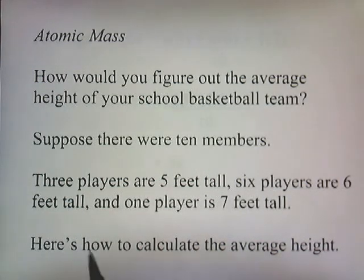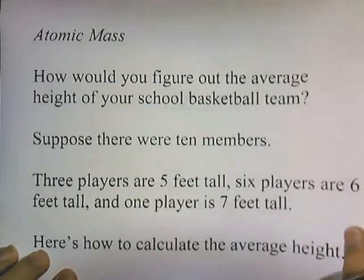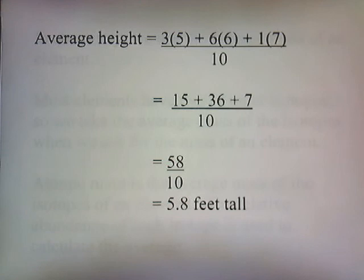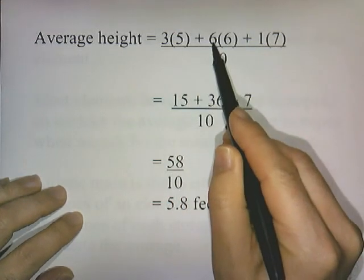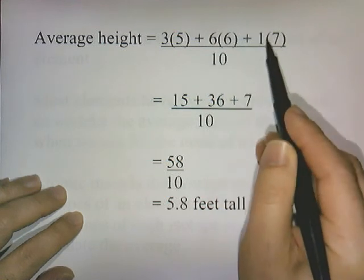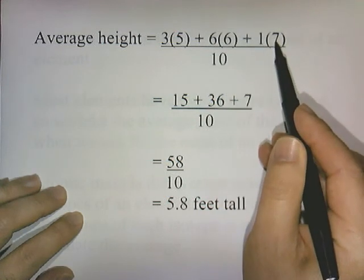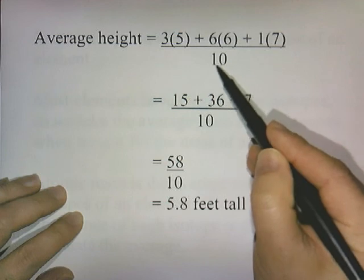So here's how you would calculate the average height of the basketball team. You have three players who are five feet tall, six players who are six feet tall, and one player is seven feet tall. And then there are a total of ten players.